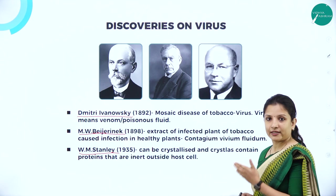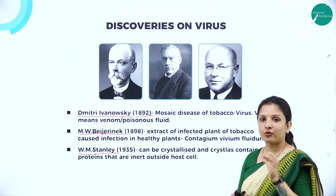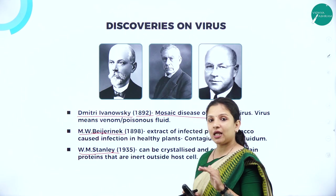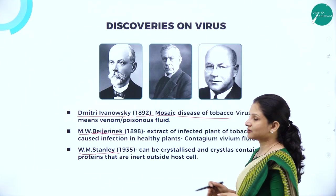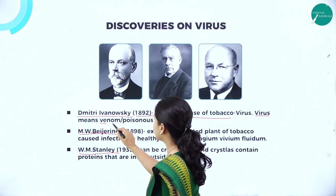Dmitry Ivanovsky, in the year 1892, was the first person to find out or extract a virus from a tobacco plant, wherein it was causing mosaic disease of tobacco. Mosaic disease of tobacco is just like how a mosaic tile looks — like patches. The leaf will also have yellow to white patches in it, which is why it is called mosaic disease of tobacco. He was the first person to coin the term 'virus', saying virus means venom or poisonous fluid.